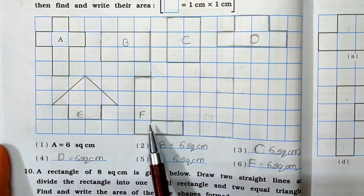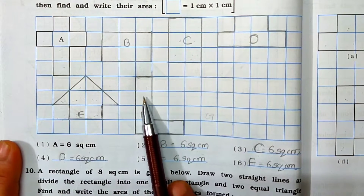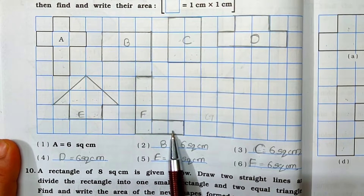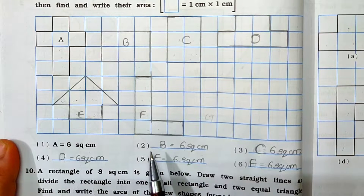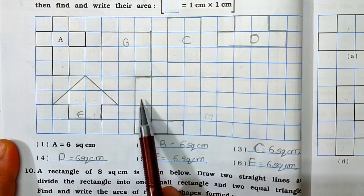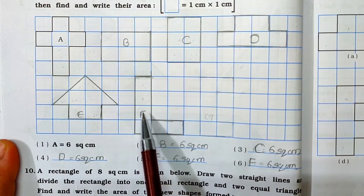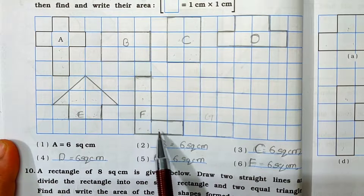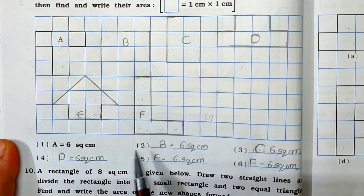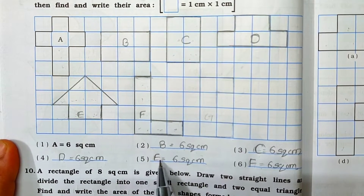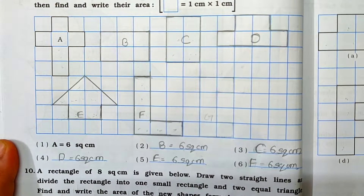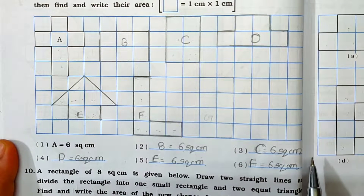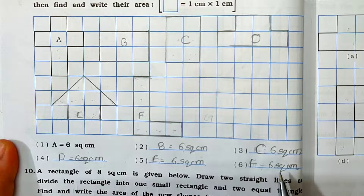Another one: here I have made an L shape. In that L shape, how many squares does it cover? See: 1, 2, 3, 4, 5 and 6. It also covers 6 square cm. So F is equal to 6 square cm.